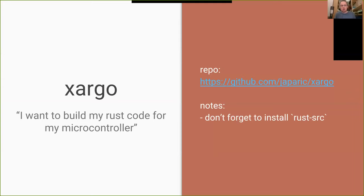The first tool out of the gate is Xargo. If you've used Rust, you're familiar with Cargo, which provides package management and compilation — it's your interface to the Rust compiler. The problem is Cargo only knows about a handful of platforms like x86, x86-64, and some common ARM processors. When you're going for a more edge-case system like a microcontroller, you need to compile the core components of the Rust language for your specific target from the Rust source. A guy named Japaric wrote Xargo to automate this — it's a thin wrapper around Cargo that cross-compiles the Rust source for your target before compiling your code.